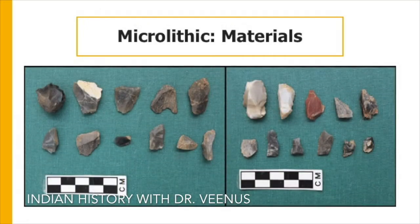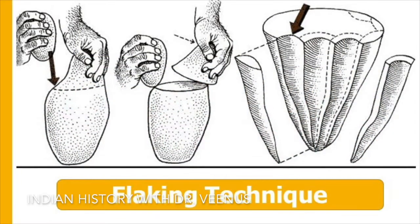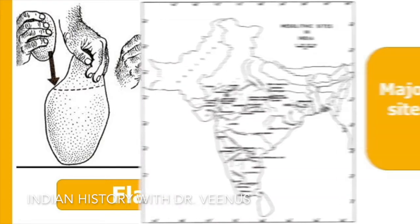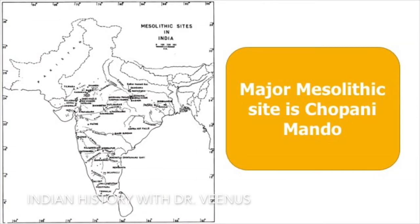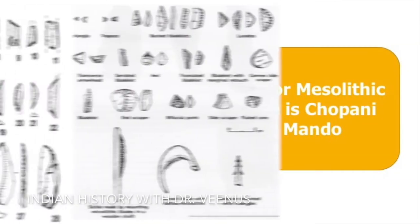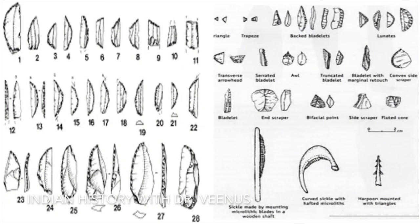Microliths were generally made of chert, quartzite, agate, jasper, and blades and scrapers through the pressure flaking technique. A major Mesolithic site, Chaupani Mandu, showed a large number of geometric microliths, handmade pottery, hammers and ring stones.